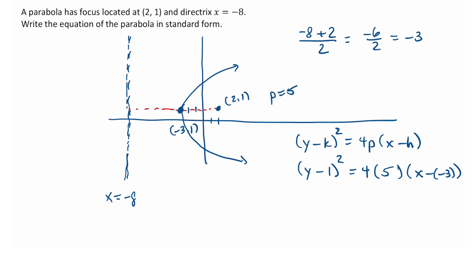So we'll substitute that in there. And now we'll just simplify what we can. (y - 1)² equals 4 times 5 is 20, and x minus negative 3 is written as x plus 3. And that is as far as we'll go to write the equation of our parabola.